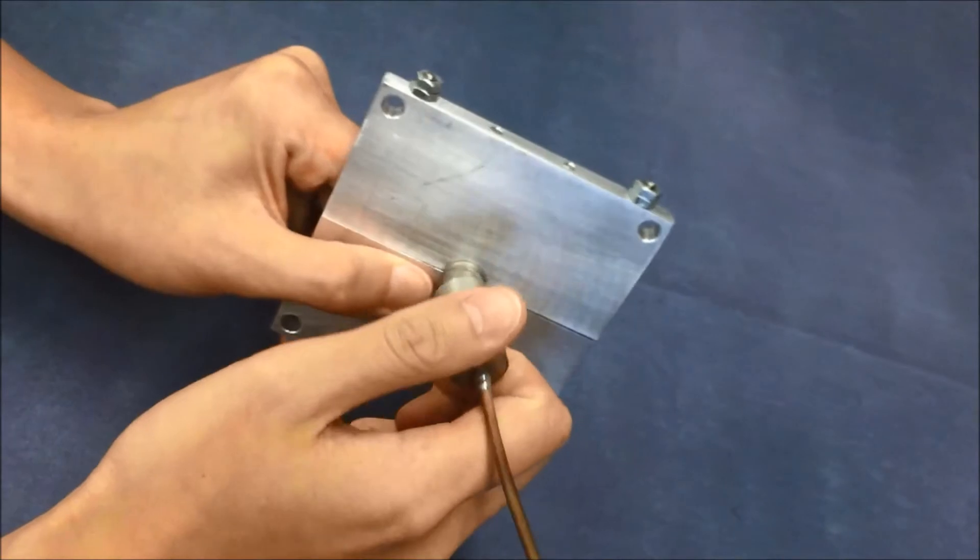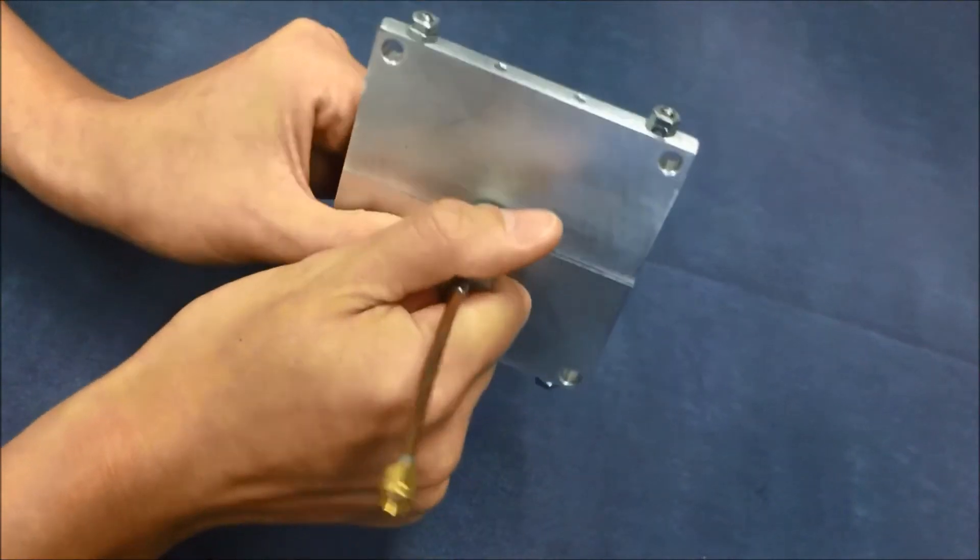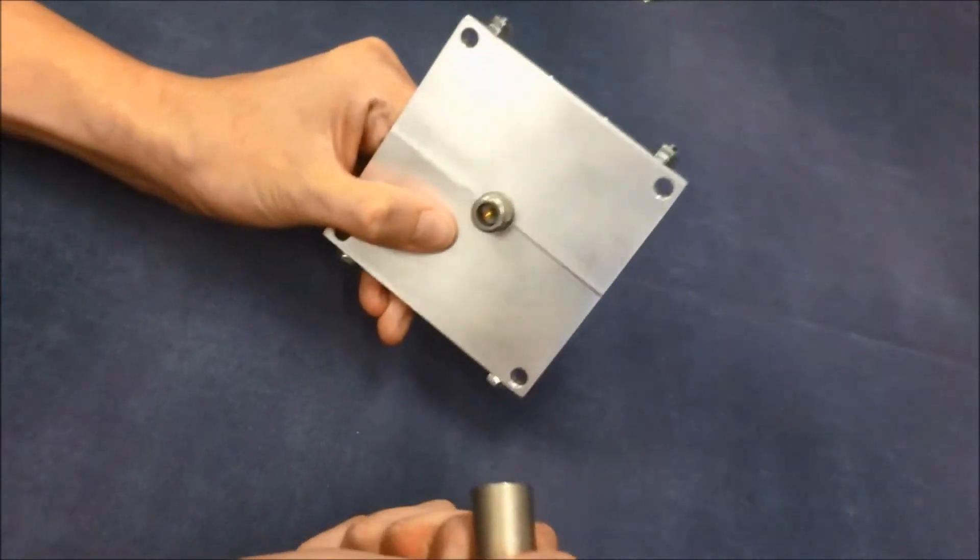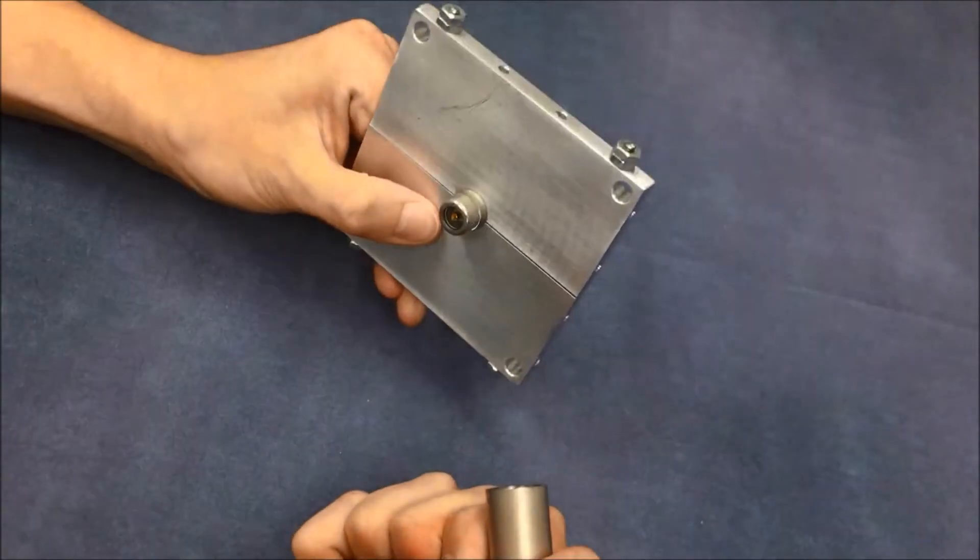Engineered grooves in the bore of the male receive the outer canted coil spring to achieve a latch or lock connection. The outer canted coil spring can also act as an EMI or RFI shield.